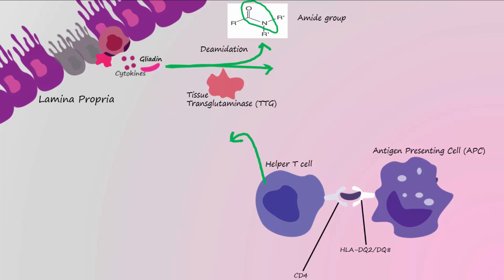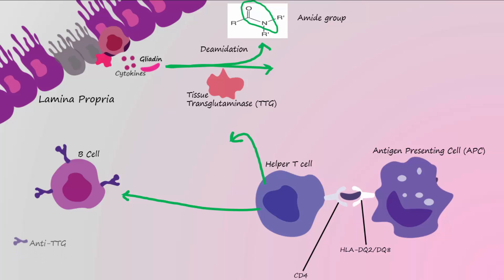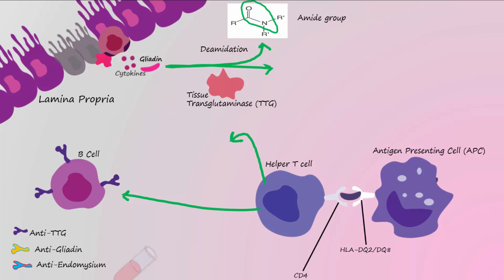T helper cells also activate B cells that produce antibodies against tissue transglutaminase (TTG), gliadin, and endomysium. Measurement of these antibodies in the blood is part of the diagnostic process for celiac disease.